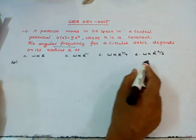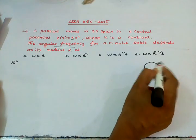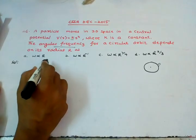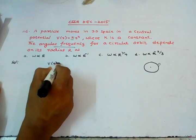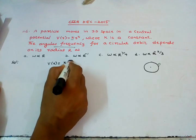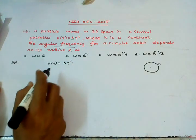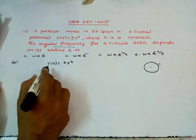A particle moving under central potential - the particle is moving under central potential, so here we have the equation: the central potential V(r) = Kr⁴. What is V(r)? That is potential.